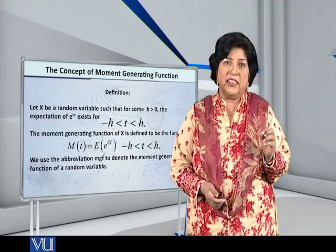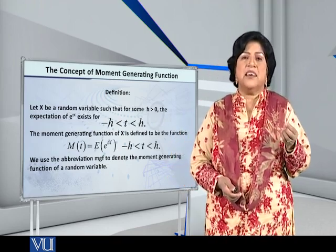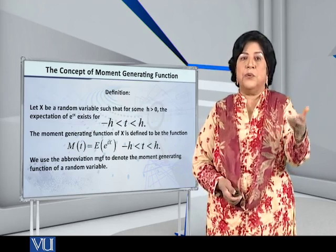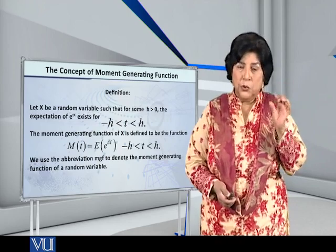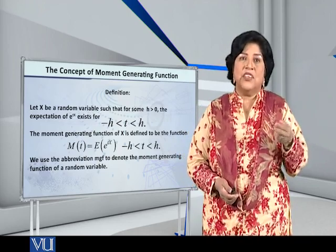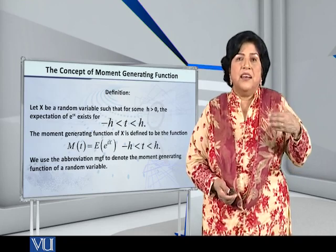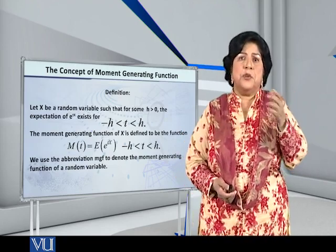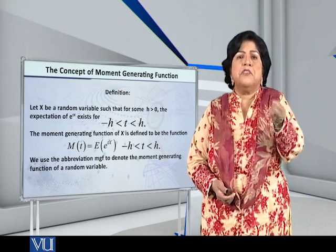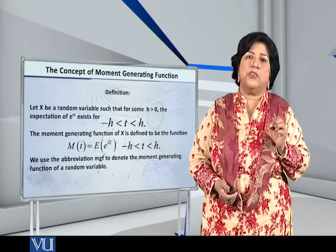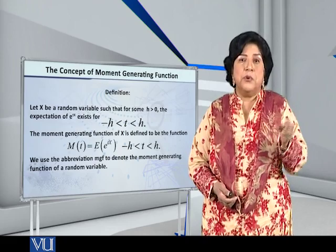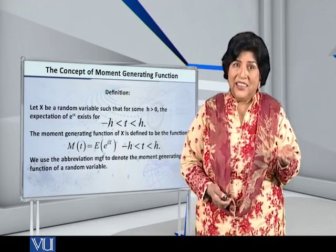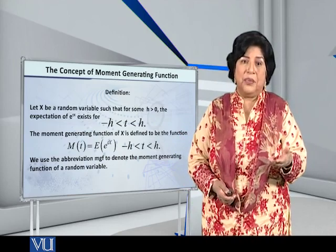Now let's see some things. x is a random variable such that for some h greater than 0, this particular expectation exists. h can be arbitrarily small, so t lies between minus h and plus h. If h is a very, very small number, then t is very, very close to 0 — t is actually in the neighborhood of 0.